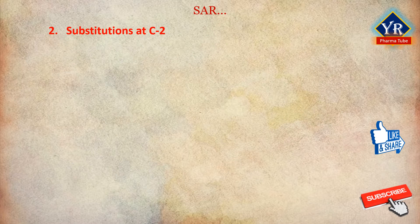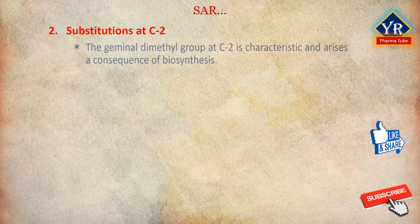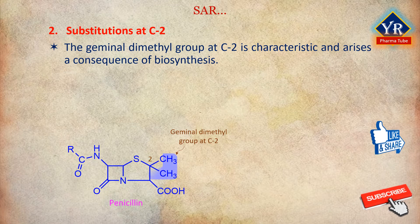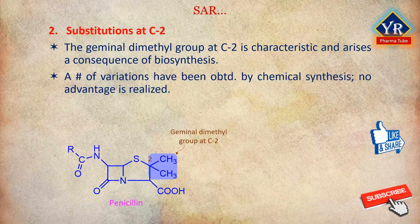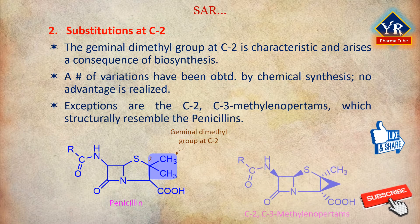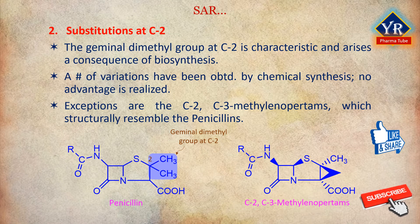Number 2: Substitutions at C2. The geminal dimethyl group at C2 is characteristic of the penicillins and arises as a consequence of biosynthesis. A number of variations have been obtained by chemical synthesis, but in general, no appreciable advantage has been realized. Interesting exceptions are the C2-C3 methylene peritams, which structurally resemble the penicillins but actually behave more as cephalosporins in terms of penicillin-binding protein profiles and spectrum of antibacterial activity.